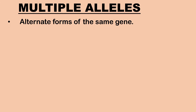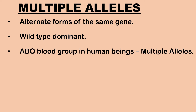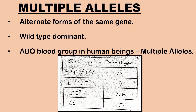Next is multiple alleles. They are alternate forms of the same gene occupying the same locus on the chromosome. The wild type is dominant over all other mutant alleles. An example of multiple alleles is the ABO blood group in human beings. The gene I controls the ABO blood group. It has three alleles: I^A, I^B and i. Alleles I^A and I^B are codominant with each other and are both dominant over the i allele. There are six different genotypes and only four different phenotypes found in human blood groups.